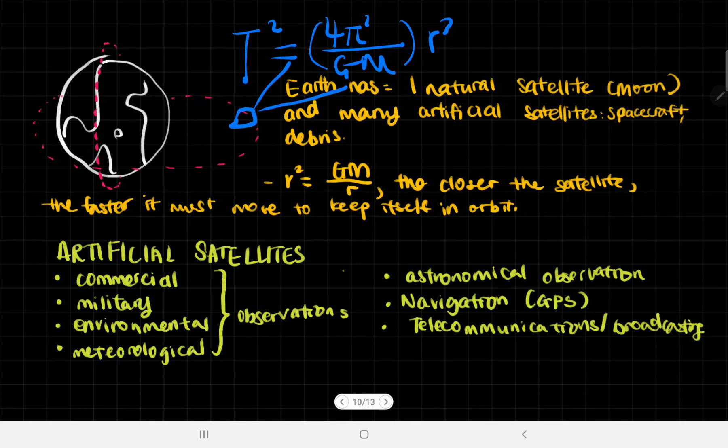For navigation, you need a minimum of three different satellites to get a precise location, and it's much better if it is four separate GPS satellites.